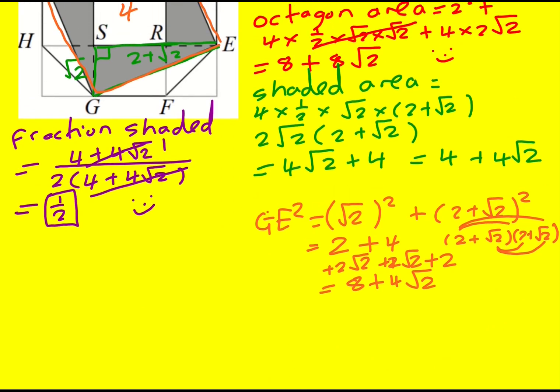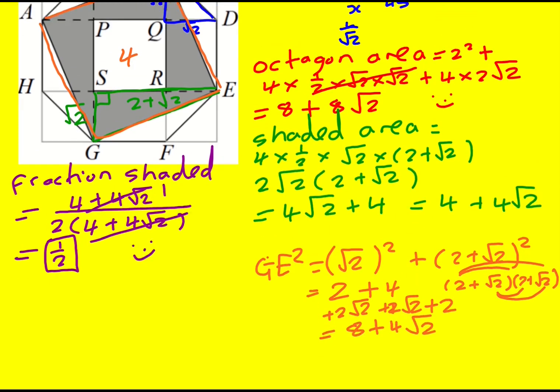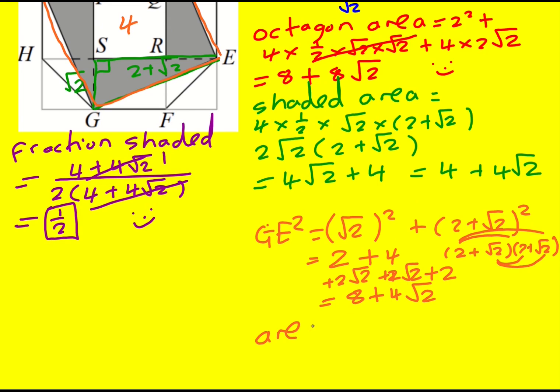Now that is actually GE squared, but that is the area of the tilted square. Because to get the area of the tilted square, I would take the length and square it, but that's essentially what I've got.